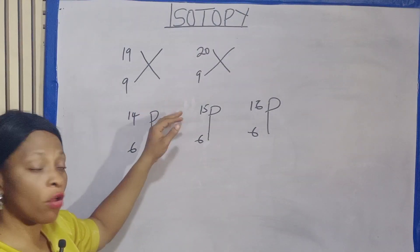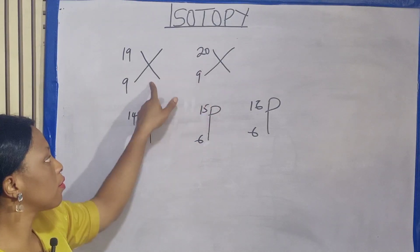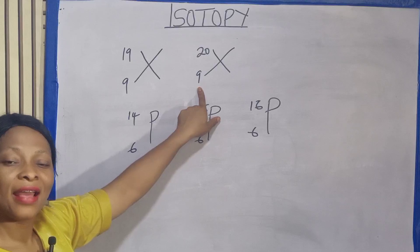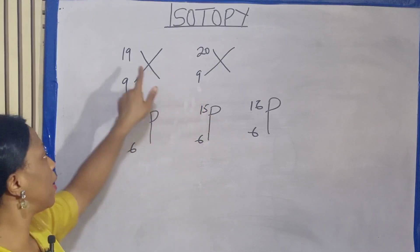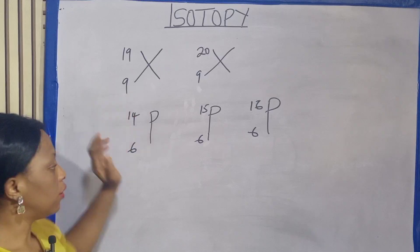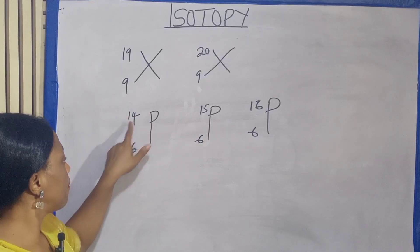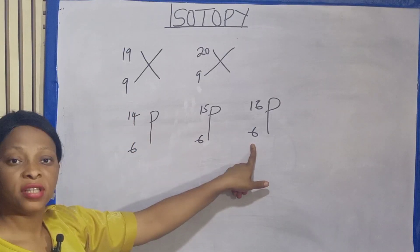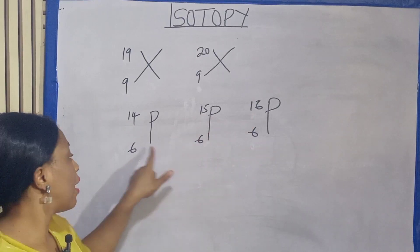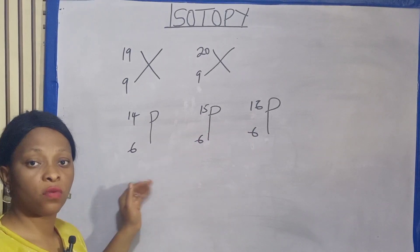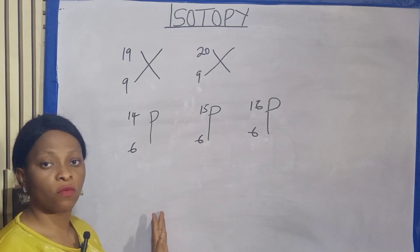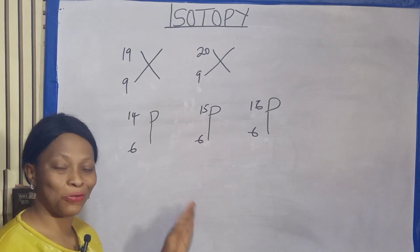Remember, isotopes are atoms of the same elements. These are the same elements; they have the same atomic number and they have different atomic mass. So these are isotopes — same atomic number but different atomic mass or mass number, and they are also the same elements. This is what we refer to as isotopes, and the phenomenon is what we refer to as isotopy.